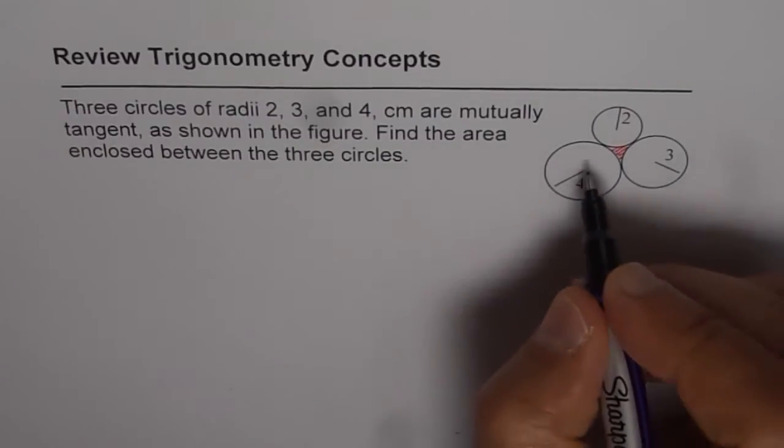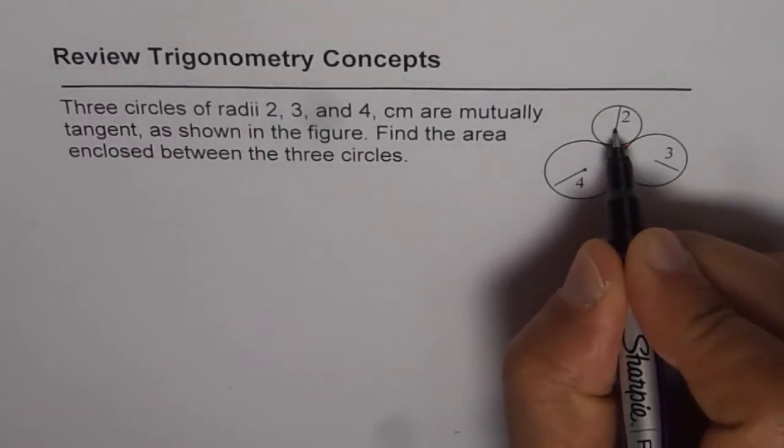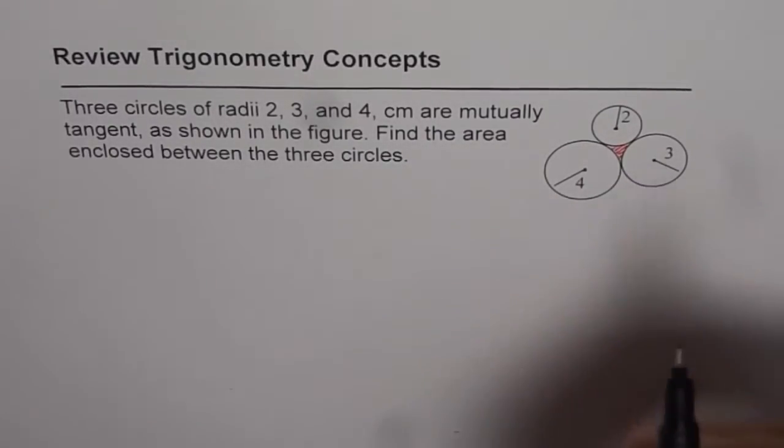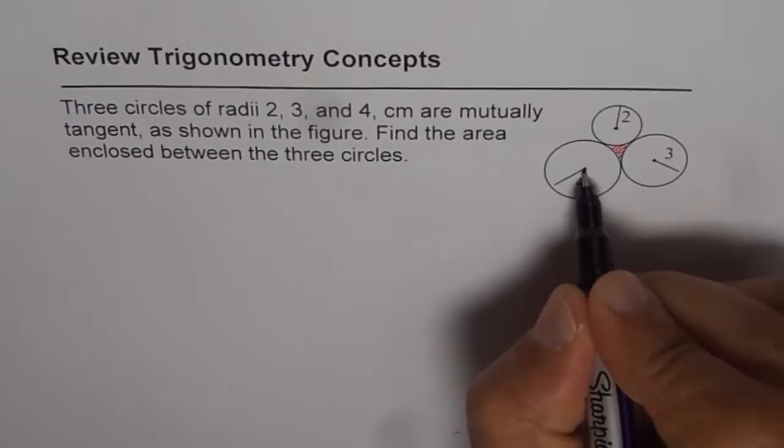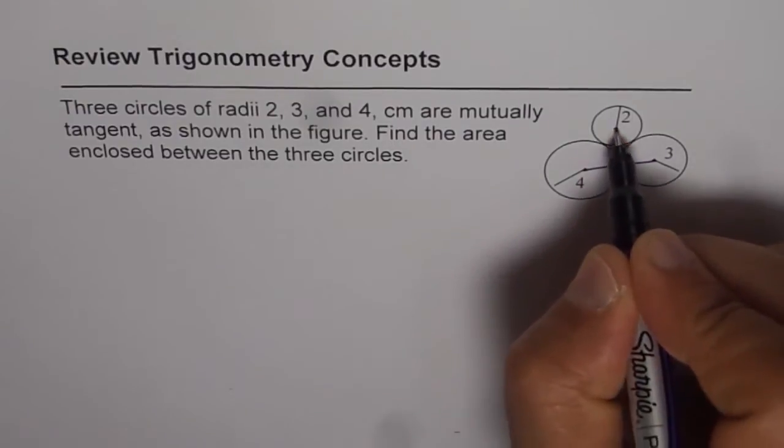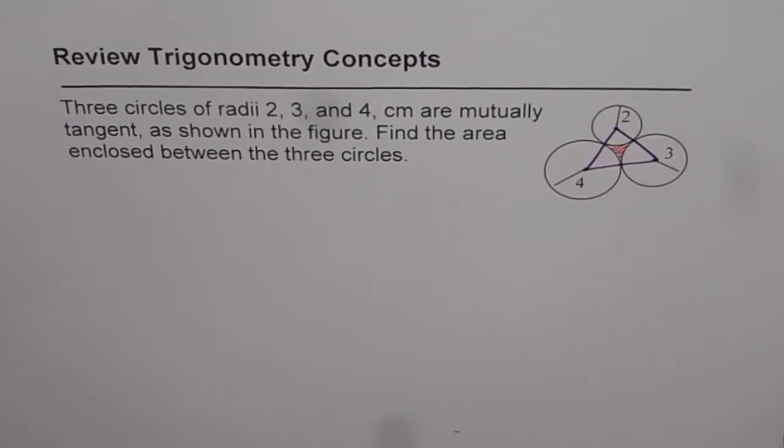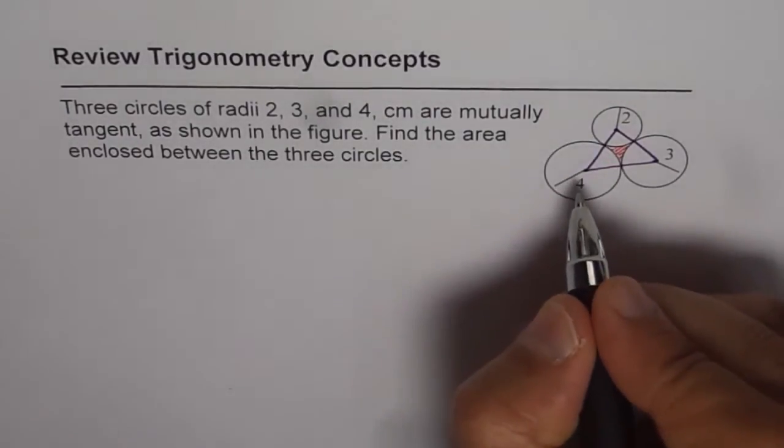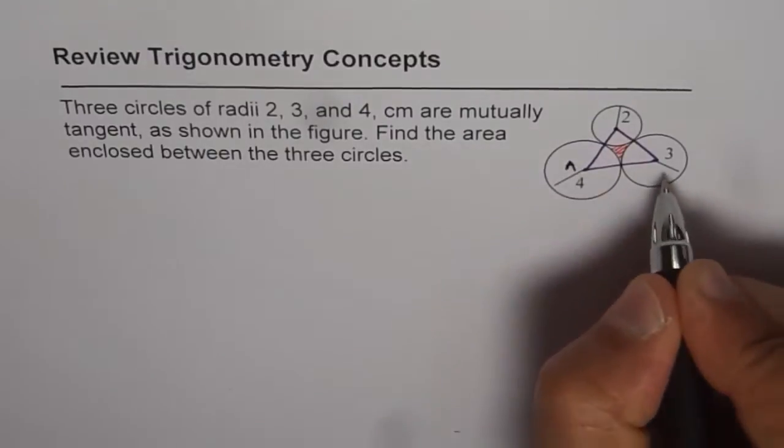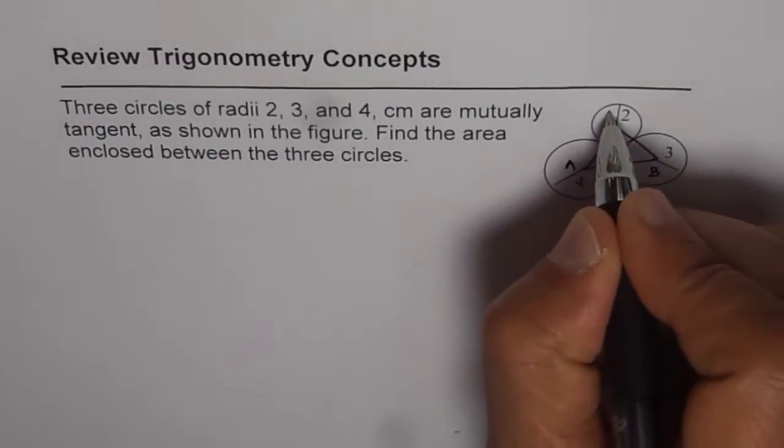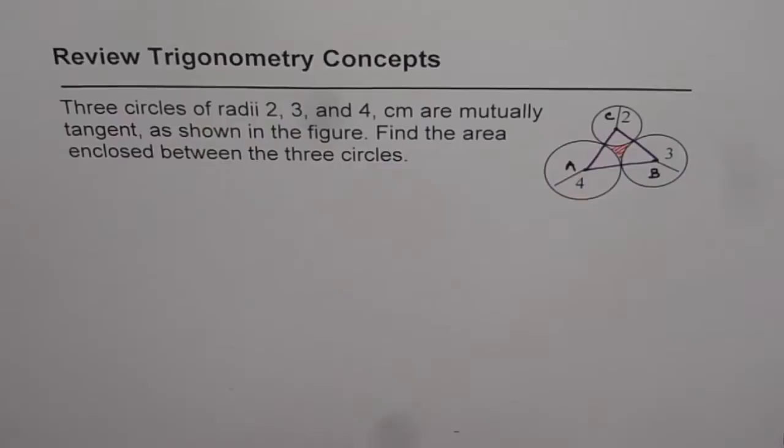Well, what we can do is, let's mark the centers and join. What do we get? We get a triangle. Do you see that? Let's label this triangle. Let us say we have a triangle here, which is triangle A, B and C.